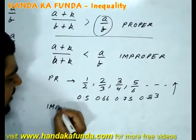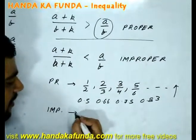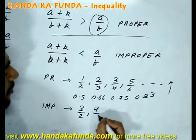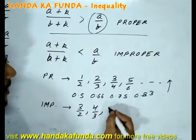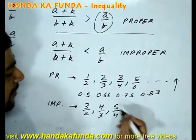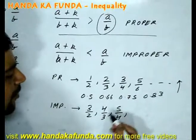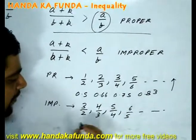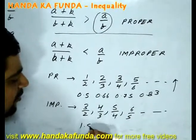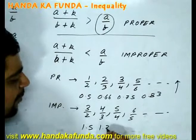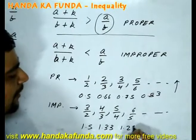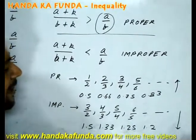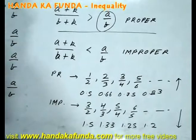Now let us take an example of an improper fraction, say 3 by 2. If I add 1 to the numerator and 1 to the denominator and keep repeating the process, I get 4 by 3, 5 by 4, 6 by 5, and so on. The value goes from 1.5 to 1.33 to 1.25 to 1.2 — as you can see, the value is decreasing.